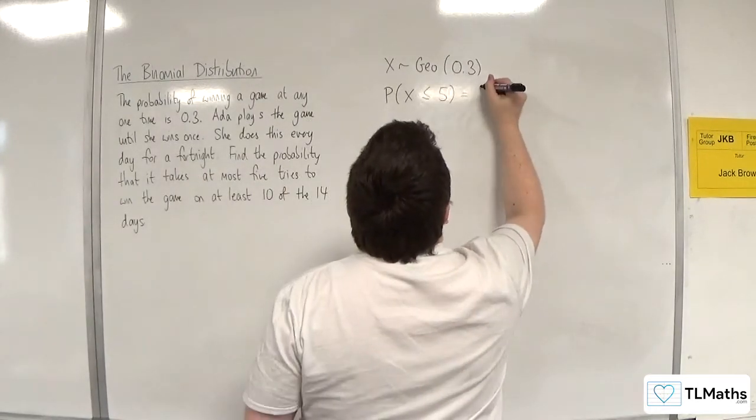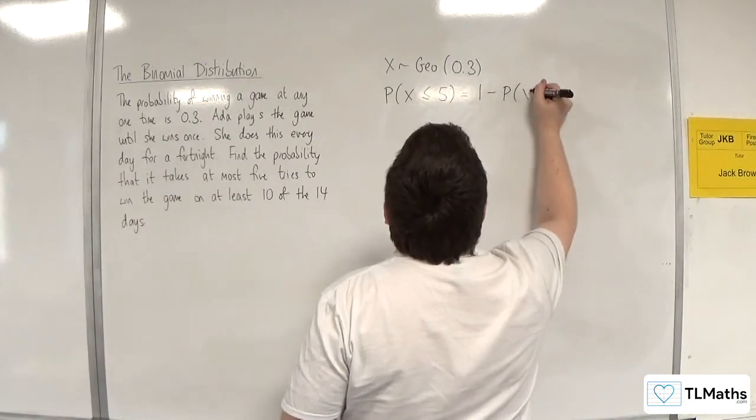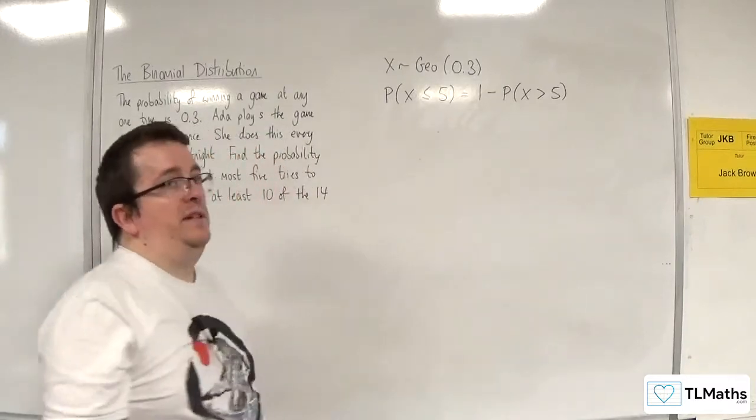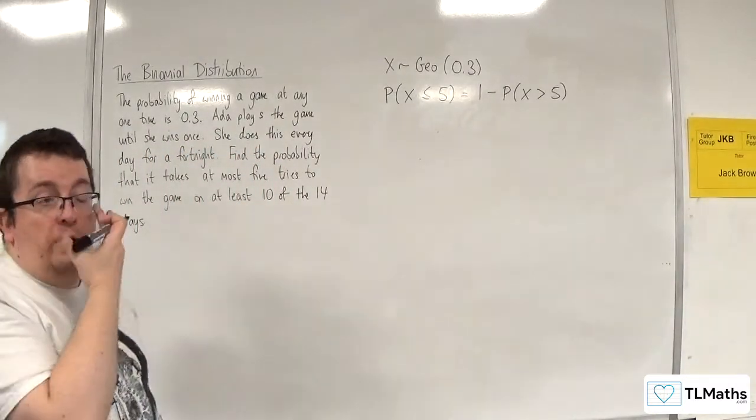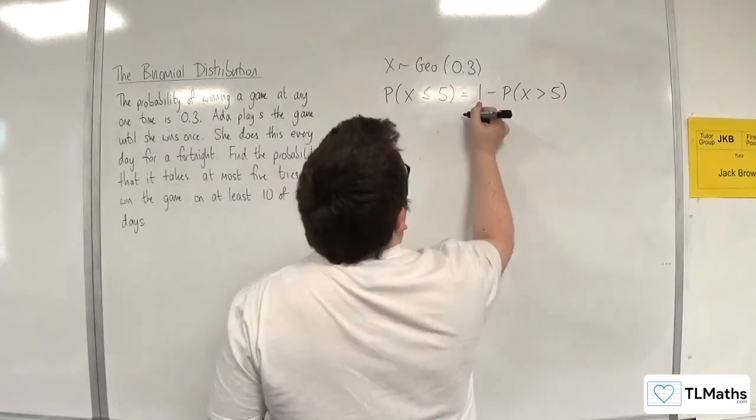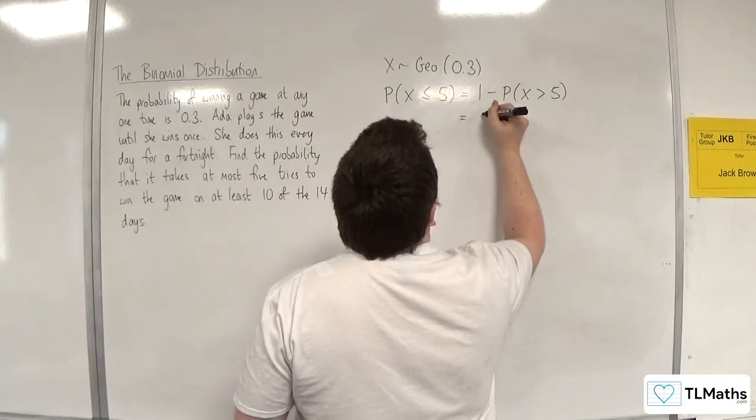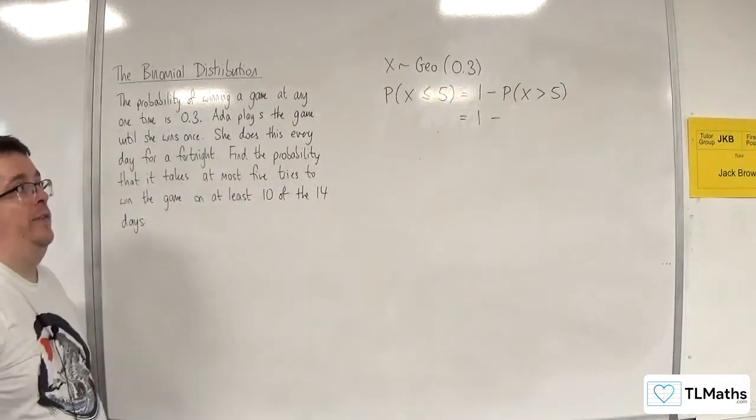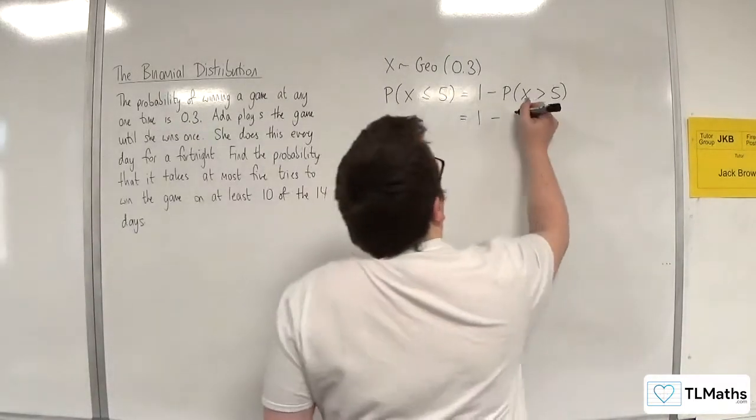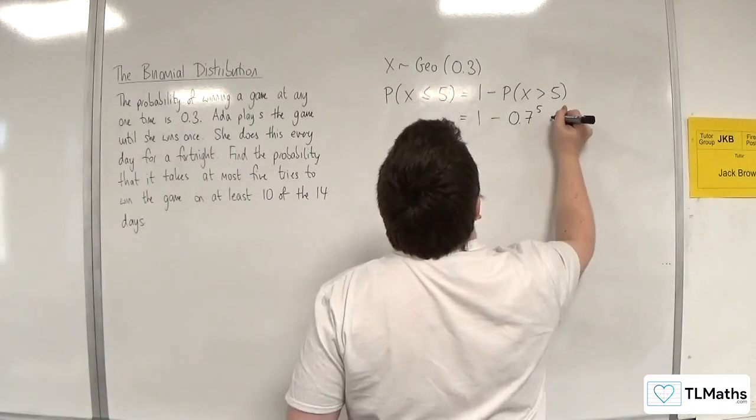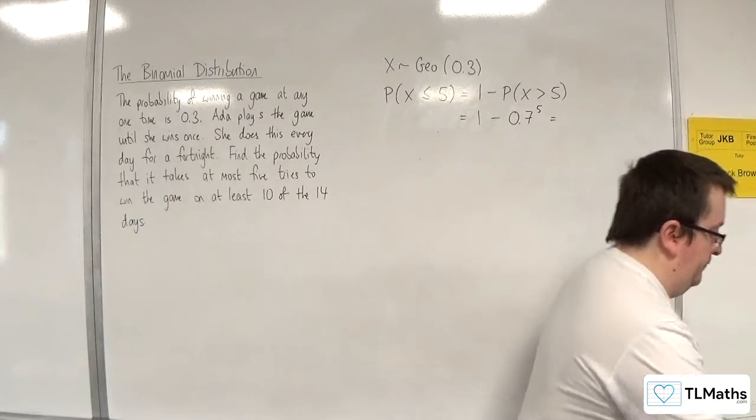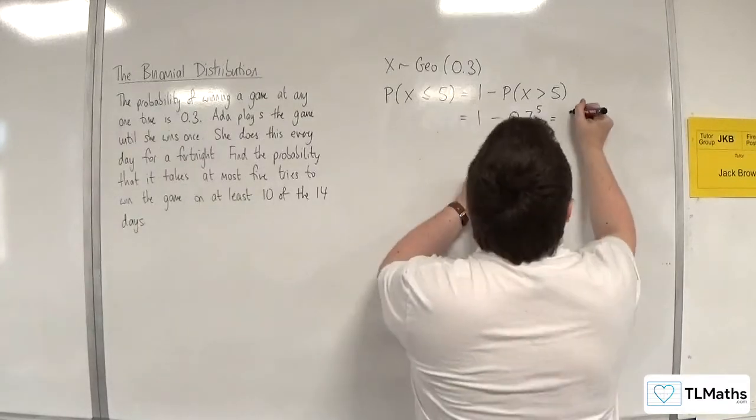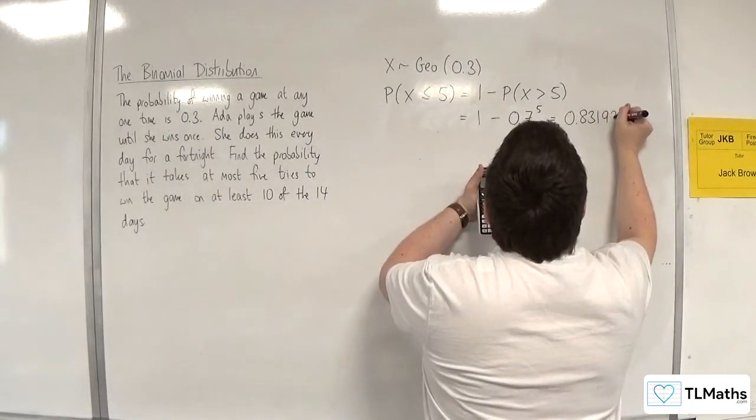Now we know we can work that out by doing one take away the probability of x being greater than five. Of course you can work out that probability directly if you've got the number works calculator. This is going to be one take away 0.7 to the power of 5, and that's 0.83193.